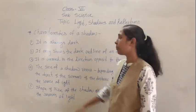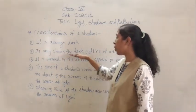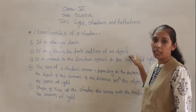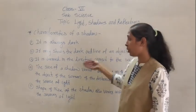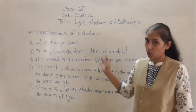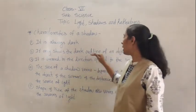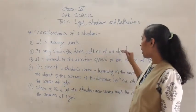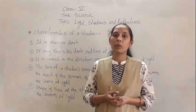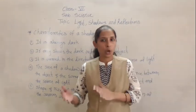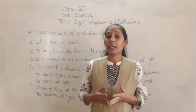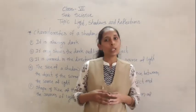The next characteristic is that a shadow only shows the dark outline of an object. The shadow always shows only the dark outline; it doesn't give all the information about an object. We can say it does not show any detail about the object.